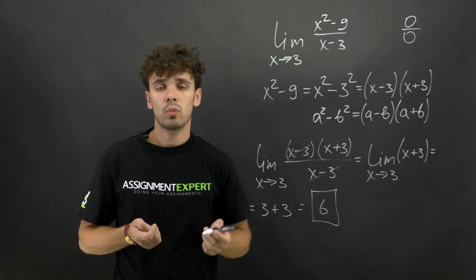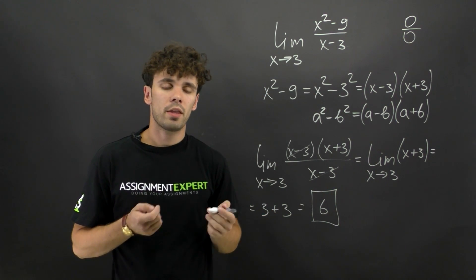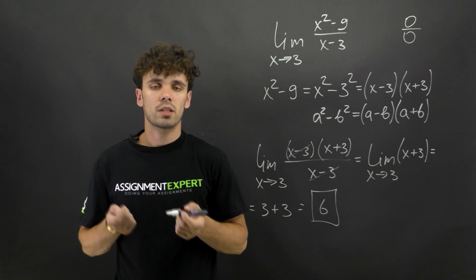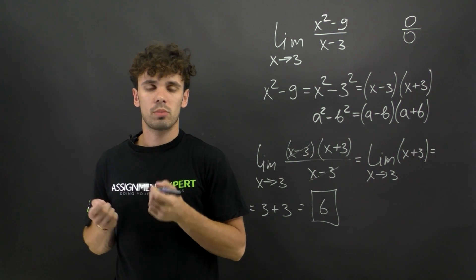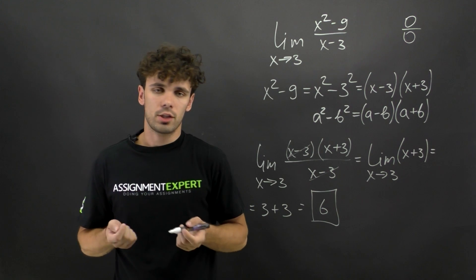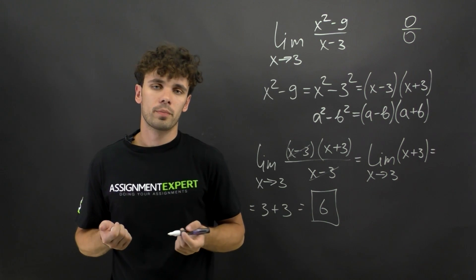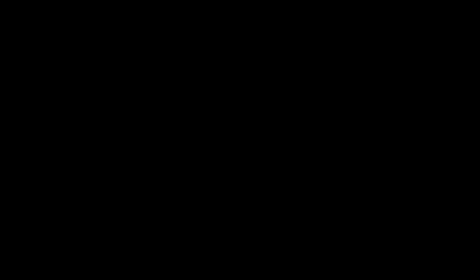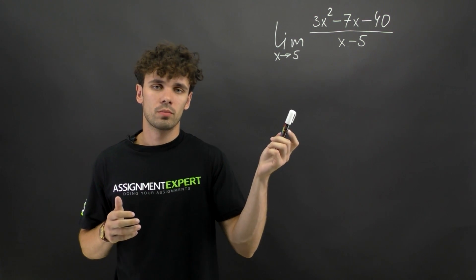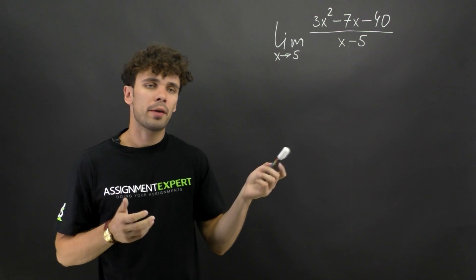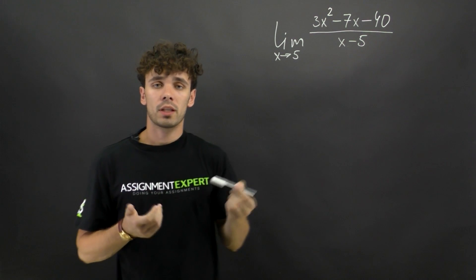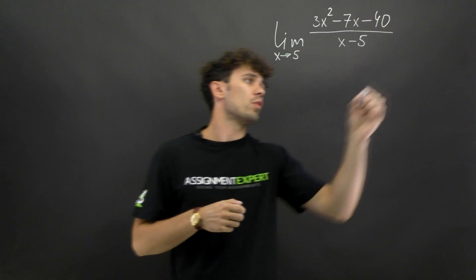This is quite simple if you know methods of easy factoring, like formulas of abbreviated multiplication or methods of polynomial factorization. Here's another limit. If we right away substitute 5 into our limit we will get 0 over 0.